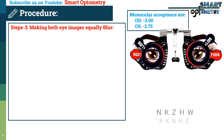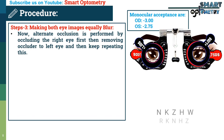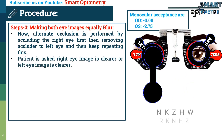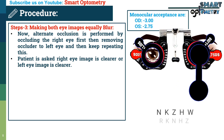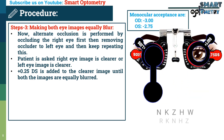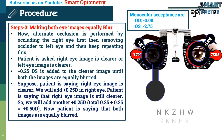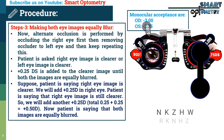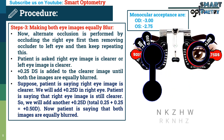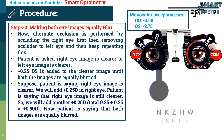Step three — making both eye images equally blurred: alternate occlusion is performed by occluding the right eye first, then the left eye, and repeating. The patient is asked whether the right eye image or the left eye image is clearer. Plus 0.25 diopter spherical is added to the clearer eye until both eyes are equally blurred. For example, if the patient says the right eye is clearer, add plus 0.25 diopters to the right eye, and continue until both images are equally blurred.